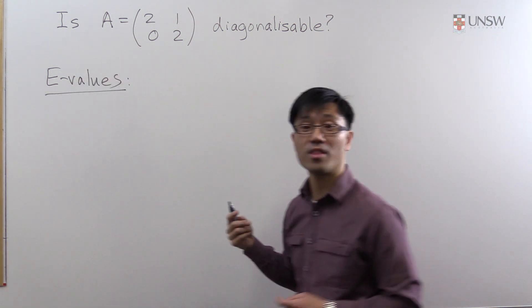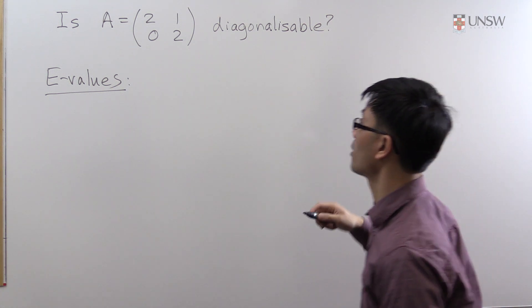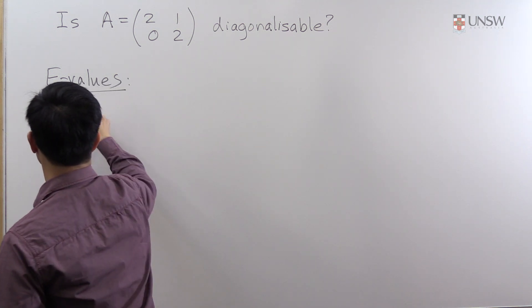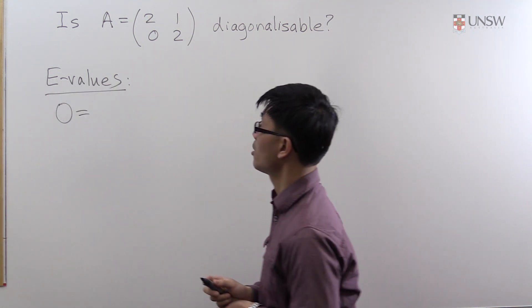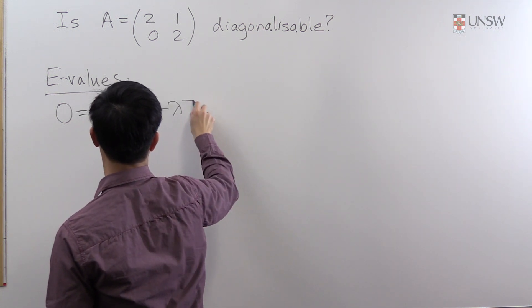So as usual to find the eigenvalues, what you need to do is work out the roots of the characteristic polynomial. So you solve 0 = det(A - λI).